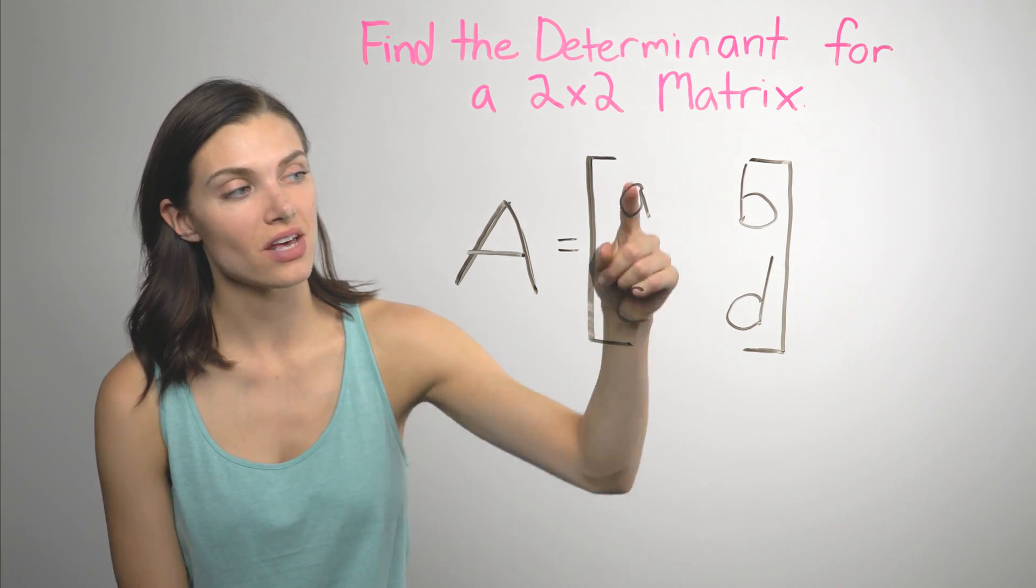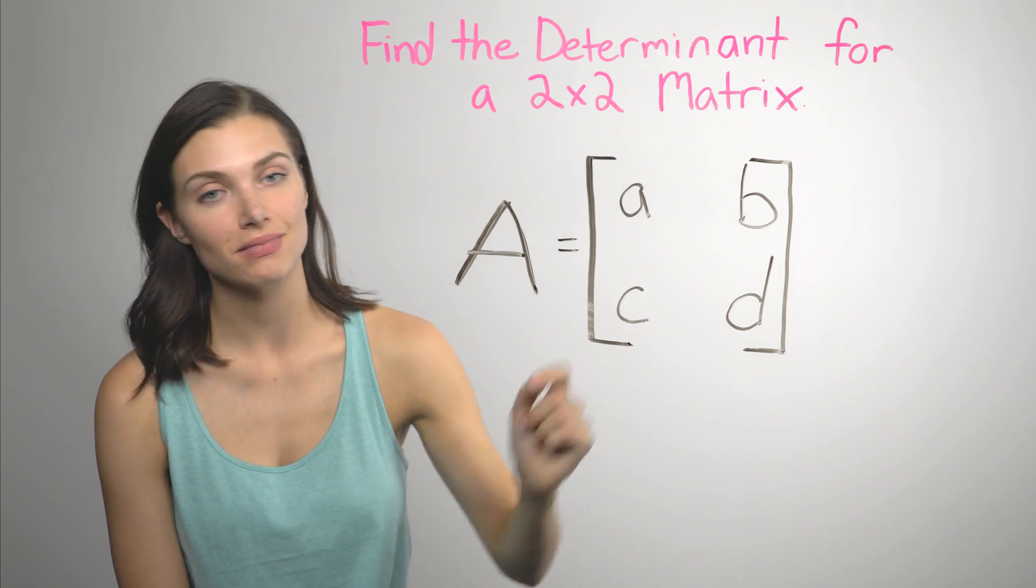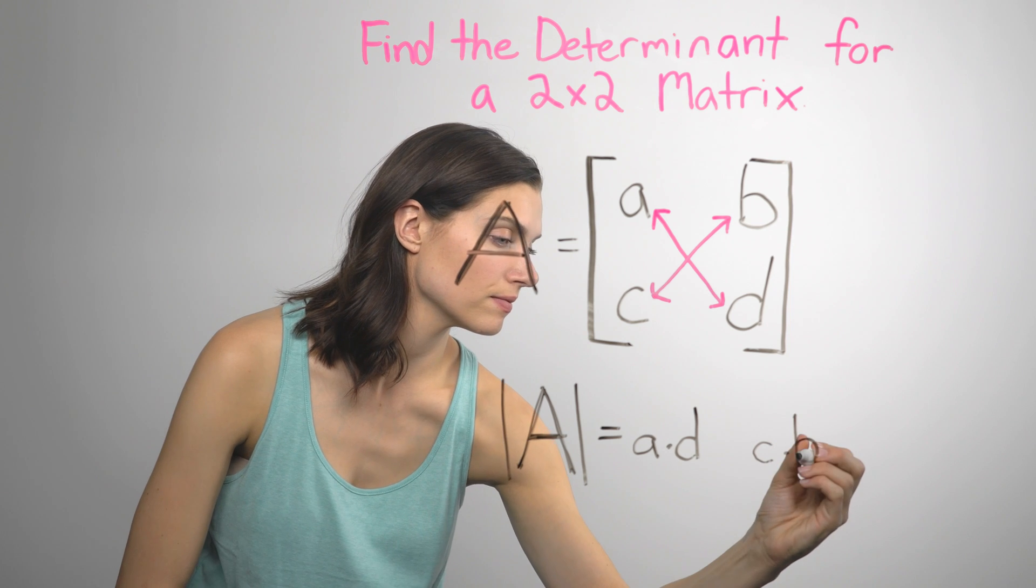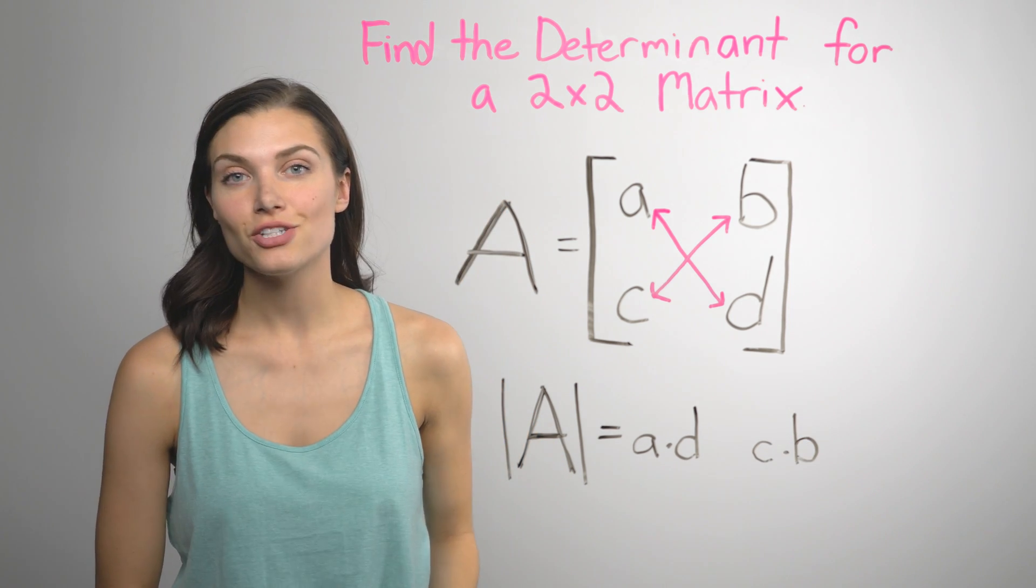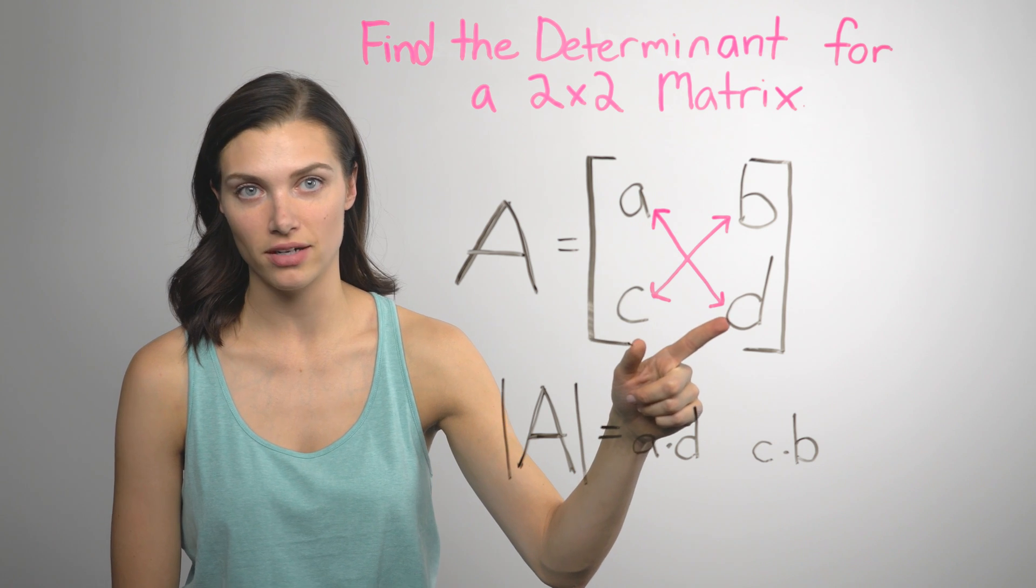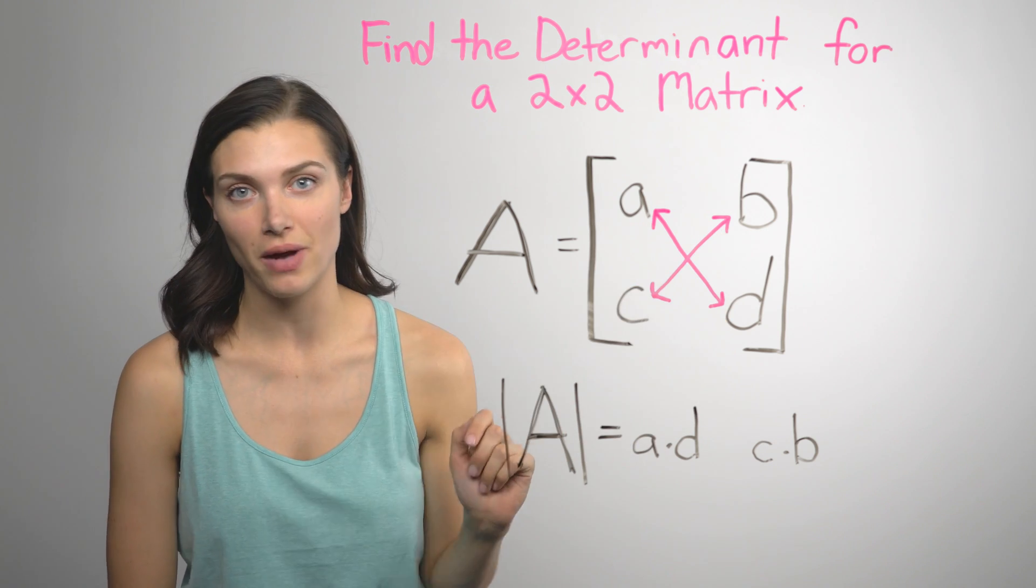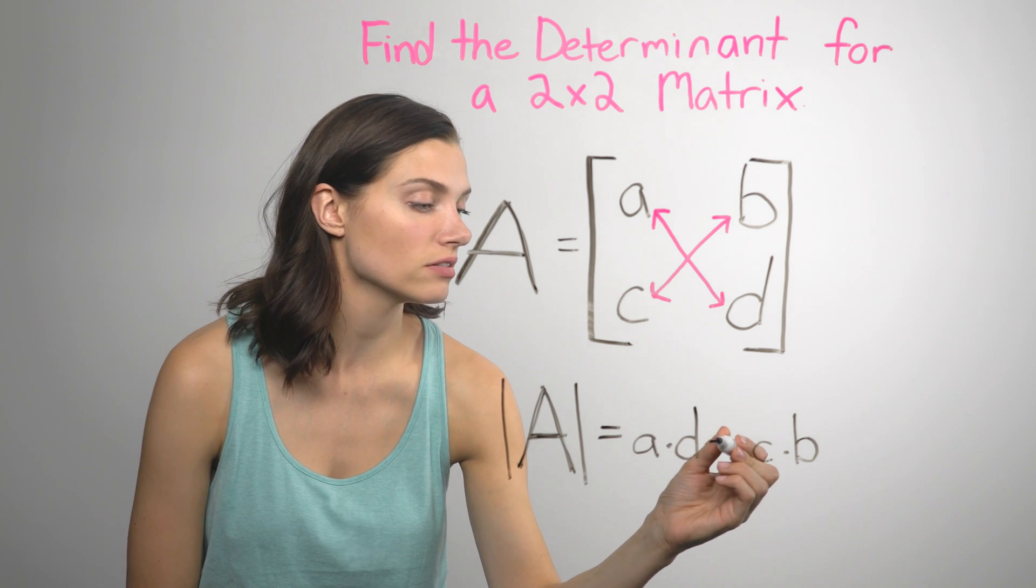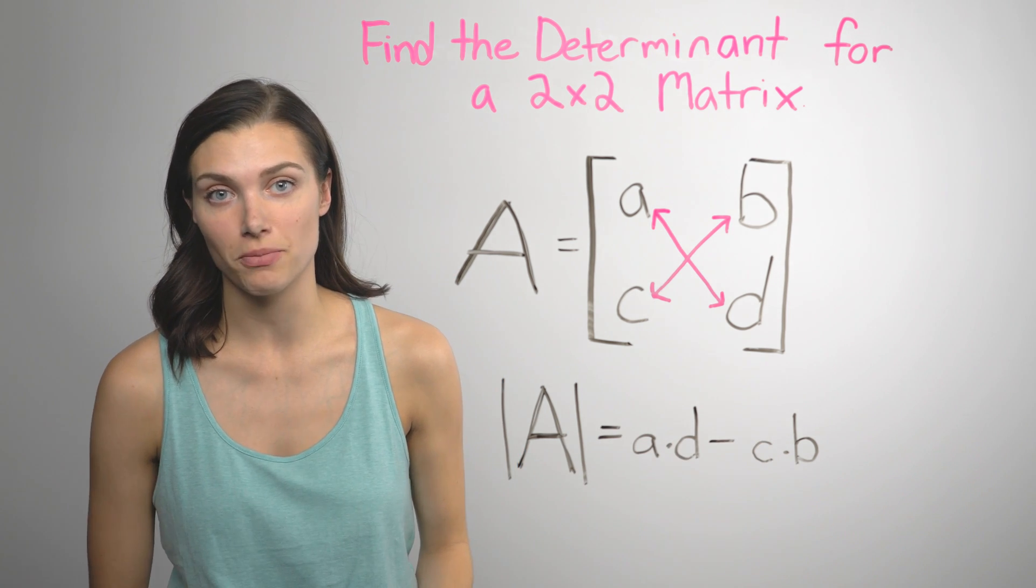So you start by multiplying the elements on the diagonals of the matrix, like this. Starting with the top left corner, you multiply that element by the bottom right corner. Then you do the same with the other two elements. Next, subtract the results of the second multiplication, and the answer is going to be the determinant.